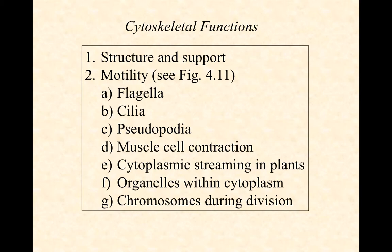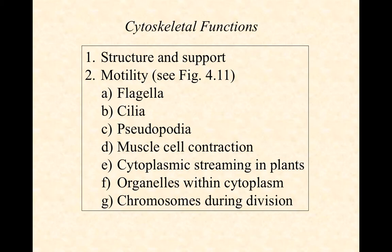Plants use something called cytoplasmic streaming, which keeps things mixed within the plant. Plants are sessile — they don't move around — so molecules and particles can settle unevenly within a plant cell. Cytoplasmic streaming, essentially like muscle cell contraction but inside a plant cell, causes the liquid of the cytosol to rotate around and keep things well mixed.